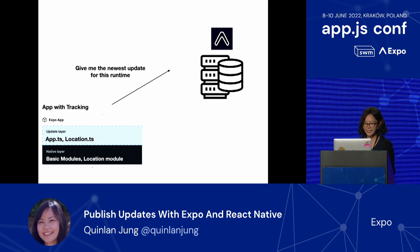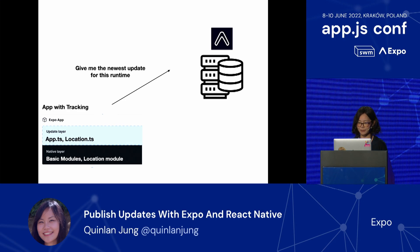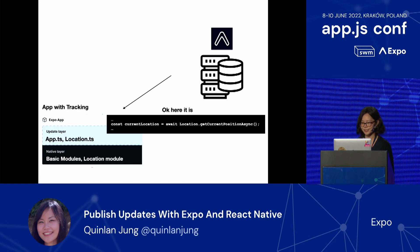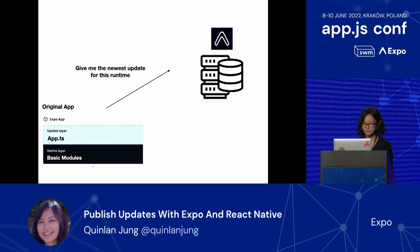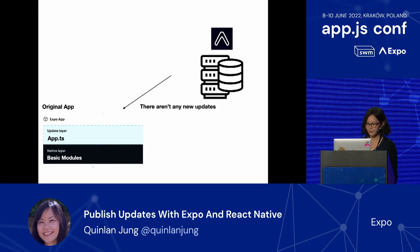So let's try this again. Instead of just asking for the newest update, the tracking app asks the server for the newest update compatible with its runtime. As usual, the server gives back the green dot update, and because we have a native location module, everything works out. Now the original app queries for the update compatible with its runtime, and this time the server looks and says there aren't any new updates, so the original app continues running as is.